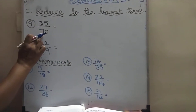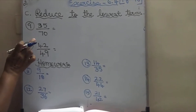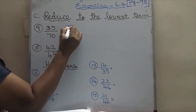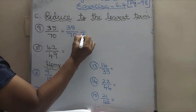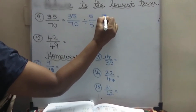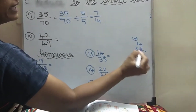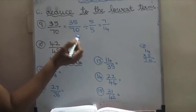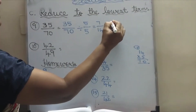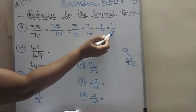9th sum: 35 by 70. It will be divided by 5 tables: 5 by 5. 7 5s are 35 and 14 5s are 70. Now again these 2 numbers can be divided by the same table — 7 table. 1 7 is 7 and 7 2s are 14. So this is the lowest term: 1 by 2.